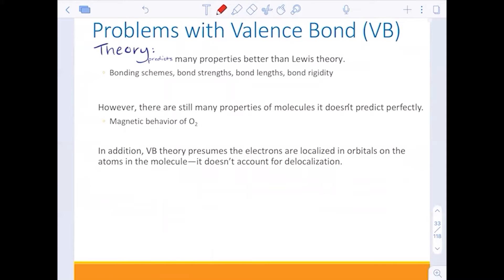Now here are some problems with valence bond theory. I know, right? It seems great. Why would we have any problems?